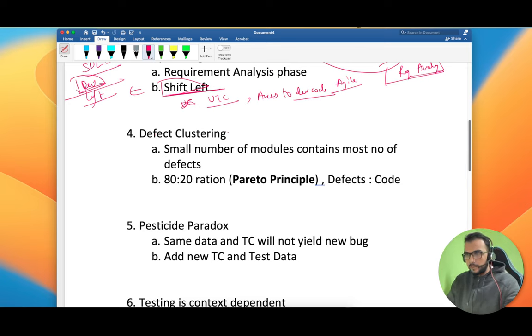Now defect clustering. What this principle says is that 80 percent of the bugs will come from 20 percent of the code.